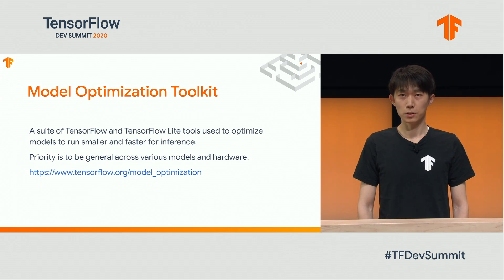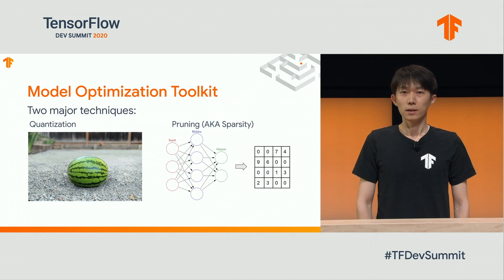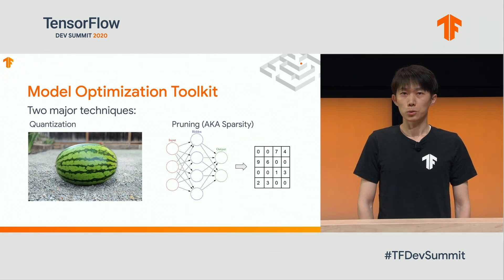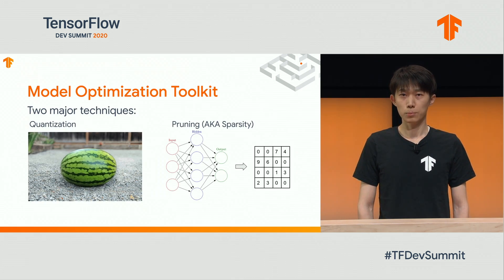Optimization is an active research area, and there are many techniques. Our goal is to prioritize the ones that are general across model architectures and across various hardware accelerators. There are two major techniques in the toolkit: quantization and pruning.